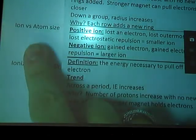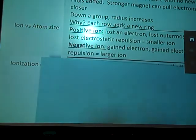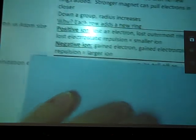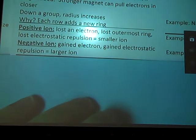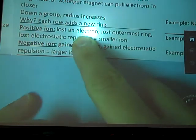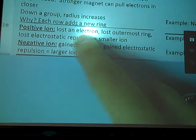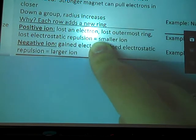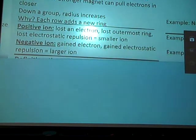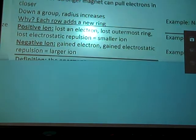So ion size versus atom size. When we talk about ions, positive ions, also known as cations, are losing electrons. So typically when they lose electrons, they are losing a ring, an entire ring, which right off the bat makes them smaller. Not only that, but less electrons means less repulsion between the remaining electrons, which allows my atom to pull them in closer. So for this one, I am just going to go to the paper. Way easier.